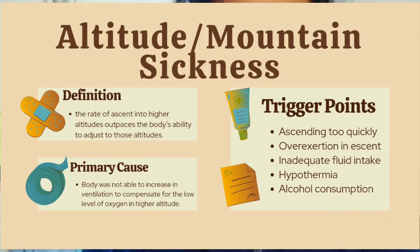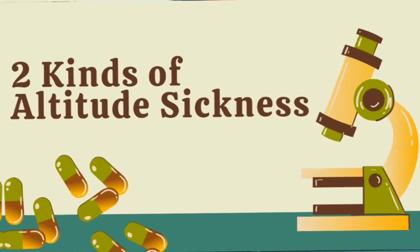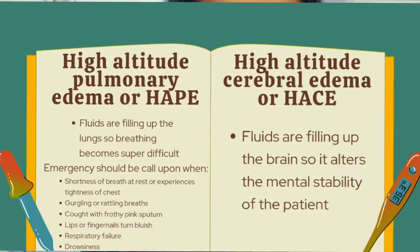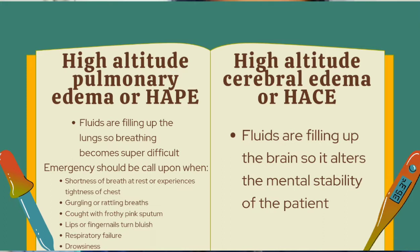Next is altitude sickness or mountain sickness. This happens because the rate of ascent into higher altitude outpaces the body's ability to adjust. The body is not able to increase ventilation to compensate for the low level of oxygen at higher altitude. Trigger factors include ascending too quickly, overexertion, inadequate fluid intake, hypothermia, and alcohol consumption. Altitude sickness may range from mild to life-threatening. High-altitude pulmonary edema (HAPE) and high-altitude cerebral edema (HACE) are life-threatening. HAPE means fluids accumulate in the lungs, making breathing extremely difficult, which can lead to respiratory collapse and ultimately death.